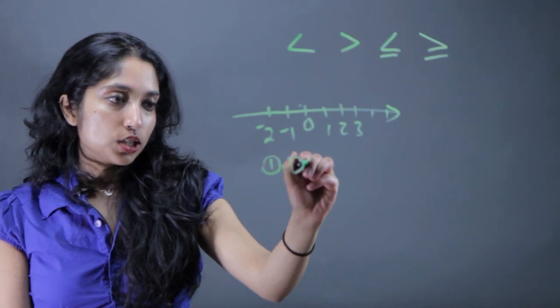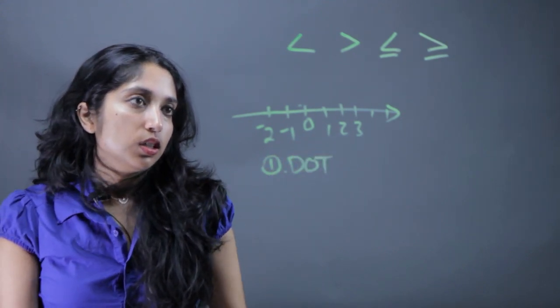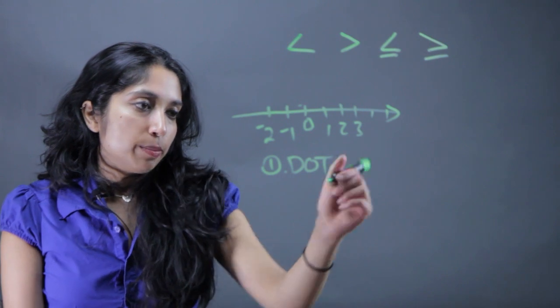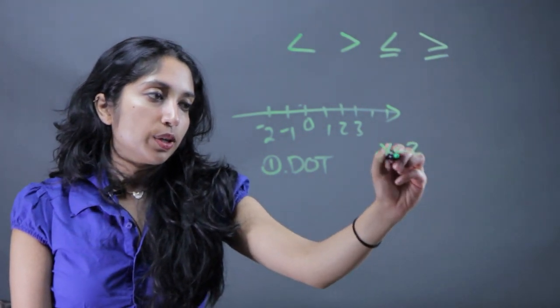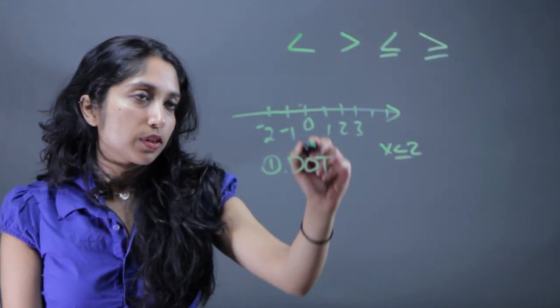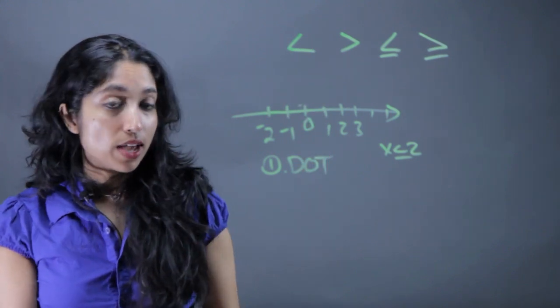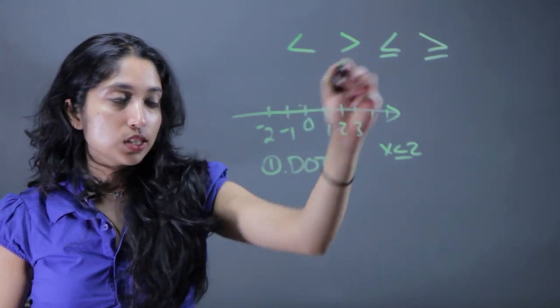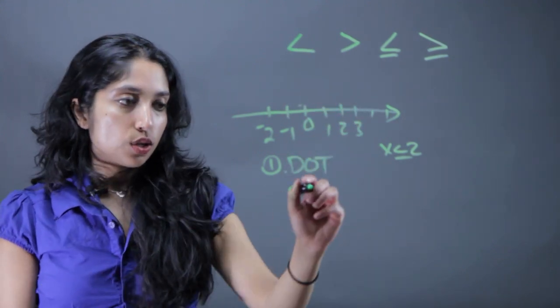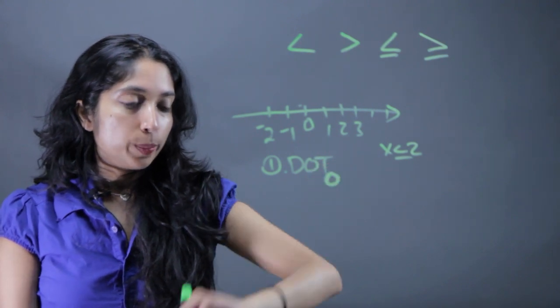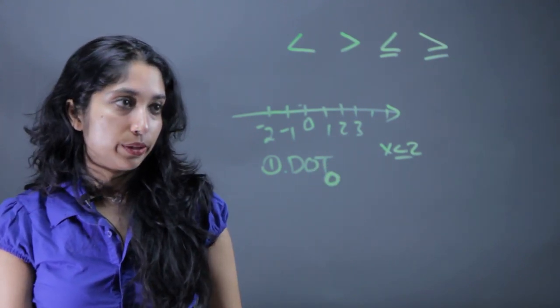The next thing to think about is the dot. For example, if we're graphing x is less than 2, the dot doesn't include that value. It's not less than or equal to, it's just less than. So the dot is going to be open because it's not including that value.